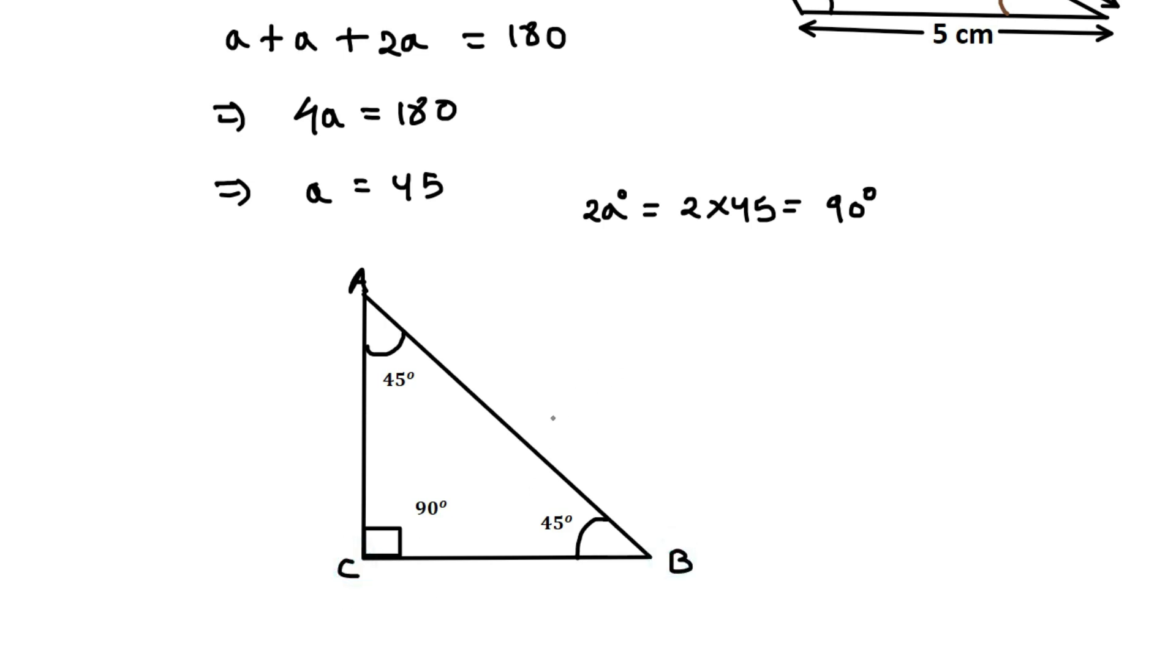We are asked to find the length of AB, which is x. We have BC given as 5 centimeters. You can see the base angles are equal, both 45 degrees.